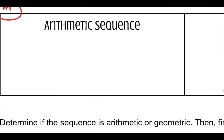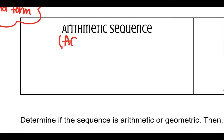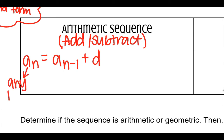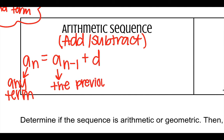For arithmetic — adding or subtracting — you're going to be given a formula that looks like a-sub-n equals a-sub-(n minus one) plus d. The a-sub-n stands for any term: the hundredth, five hundredth, or fifth term. The a-sub-(n minus one) is the previous term, so the term before it. If you wanted to find the fifth term, you need the fourth term. And d refers to the common difference.